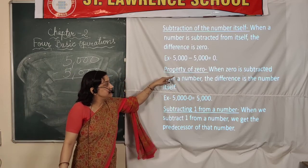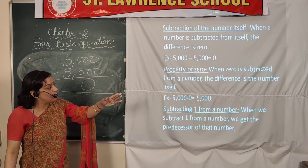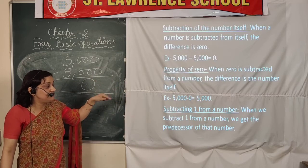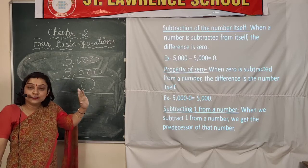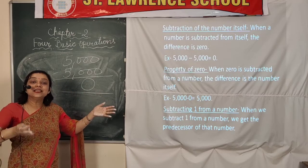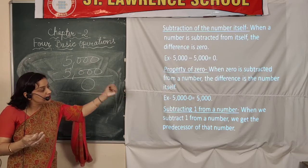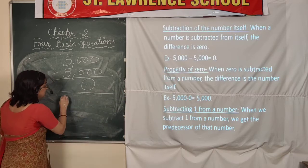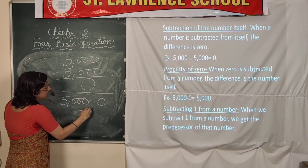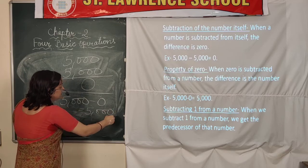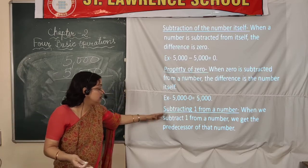The next property is the property of zero: when we subtract zero from a number, the difference is the number itself. Because zero has no value, if we are not subtracting anything meaningful from the number, the number remains the same. For example, 5000 minus 0 equals 5000.